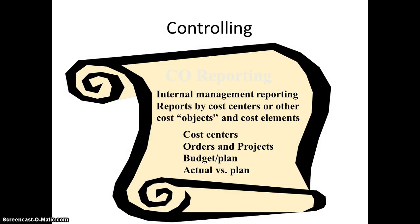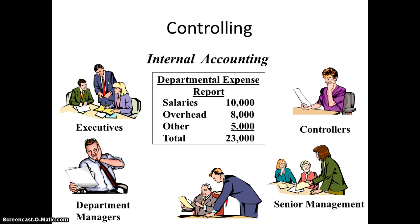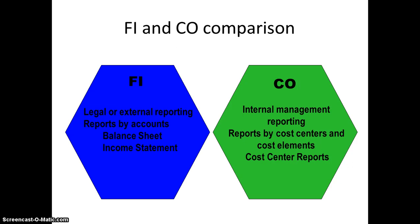So internally, controlling deals with internal management reporting — or internal reporting — by cost centers or other cost objects and cost elements. Cost centers, orders and projects, budget plan, actual versus plan — these are all maintained at the controlling level. The internal accounting involves controllers, senior management, department managers, and executives. FI deals with external accounting — legal or external reporting, reports by account, balance sheet, and income sheet. Controlling is internal management reporting — reports by cost centers and cost elements, cost center reports.